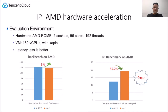AMD SVM introduced hardware acceleration to boost virtual IPI performance. The source IPI doesn't need to VM exit when sending unicast IPIs or multicast IPIs in most conditions, and the virtual IPI can be sent to the target virtual CPU directly. We ran hackbench and the IPI benchmark on one AMD Rome server — two sockets, 96 cores, 192 threads — with a VM of 180 vCPUs with AVIC exposed. We can observe a 3% hackbench performance improvement, which benefits single-target IPIs. However, we observe a 55.2% IPI benchmark performance drop for multicast IPIs. It is strange that hardware acceleration performs worse than software emulation.